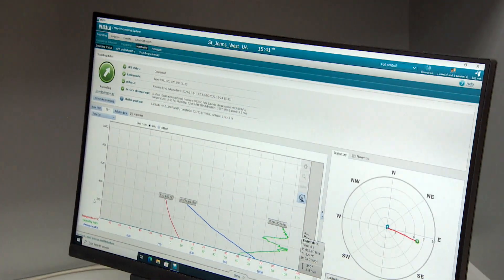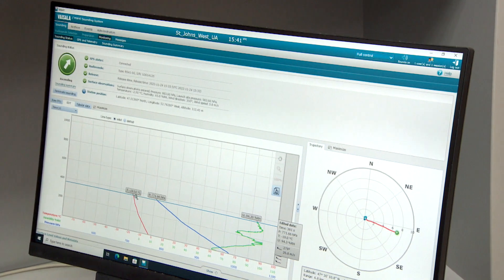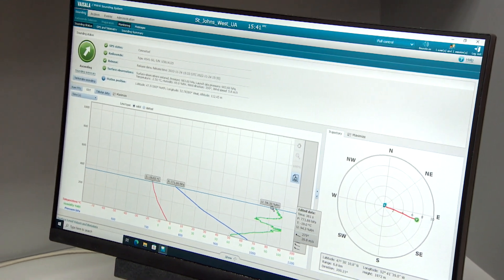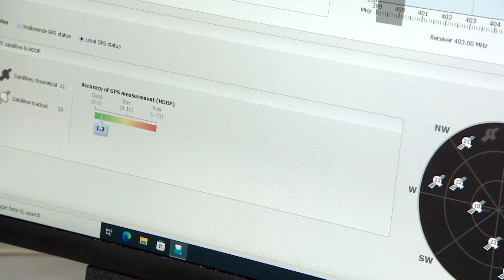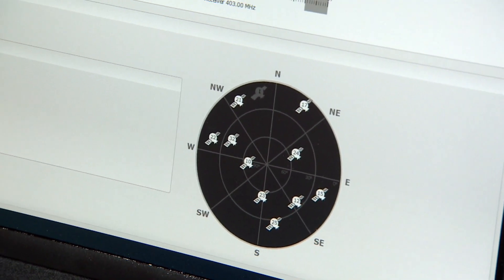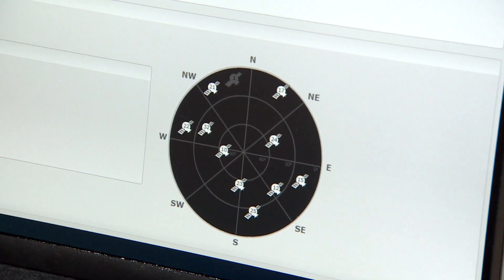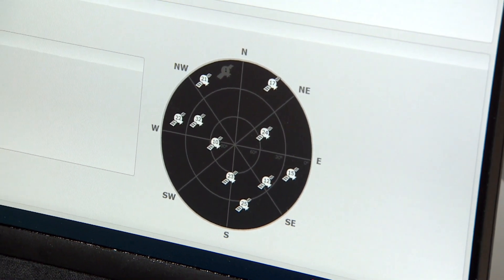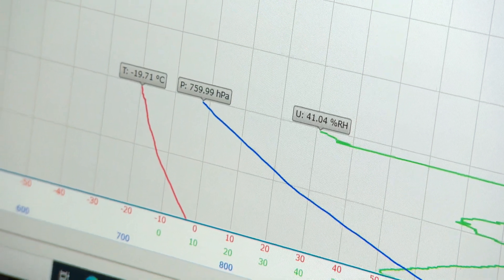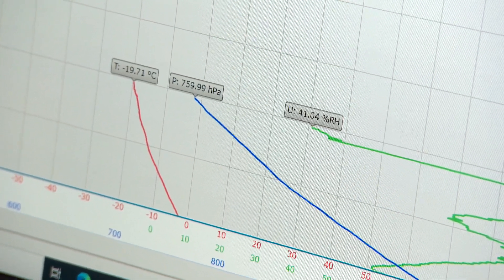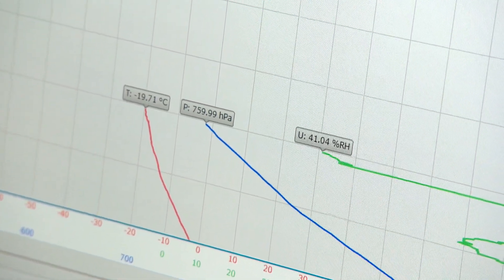You can see the data coming in here. This is called a sounding. The temperature, the pressure and the humidity is all coming in here now. And we can go over to the GPS and you can see all the signals that it's picking up, all the satellites. So it's 10 of the 11. We need at least four in order for it to work properly. So now we can sit here and watch until the balloon pops.